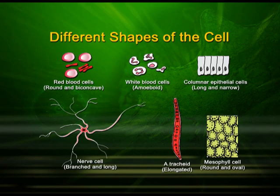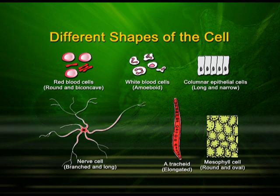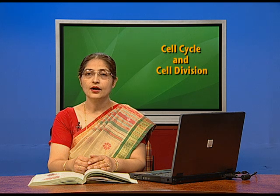Let's have a look at some different eukaryotic cells and notice the difference in their shapes. The human erythrocytes, or red blood corpuscles, are round, discoid and biconcave. The human leukocytes, the white blood corpuscles, are amoeboid in shape. The columnar epithelium cells are long, tall and narrow. The nerve cells are branched and long. The tracheids in plants are long, narrow and elongated, whereas the mesophyll cells in plants are round and oval.